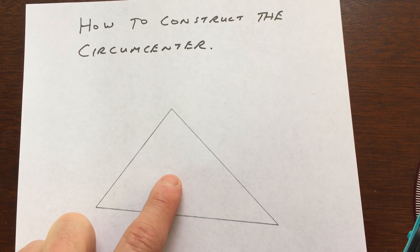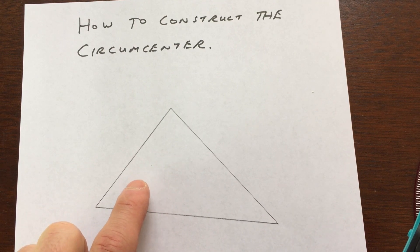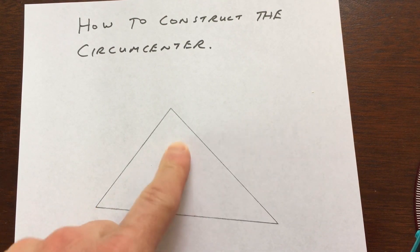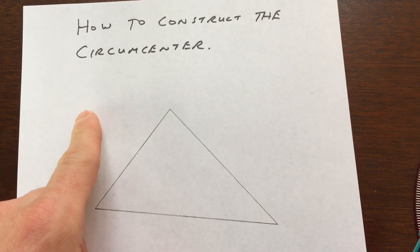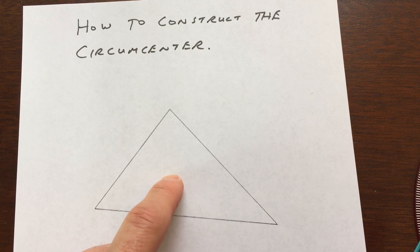The circumcenter is the point of concurrency of the three perpendicular bisectors of the sides of a triangle. So what we're going to do is draw the perpendicular bisector of this side of the triangle, this side of the triangle, and this side of the triangle, and they're all going to cross at one point. That's the circumcenter.